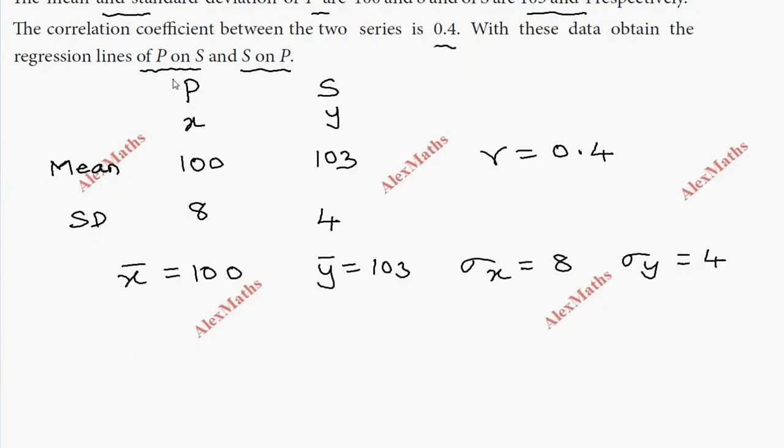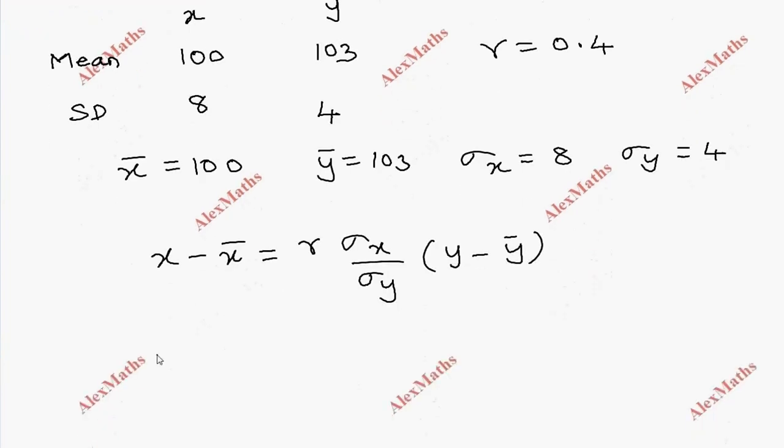The formula is x minus x̄ equal to r into σx by σy into y minus ȳ. So x minus 100 equal to 0.4 into σx is 8, σy is 4, and y minus ȳ is 103.